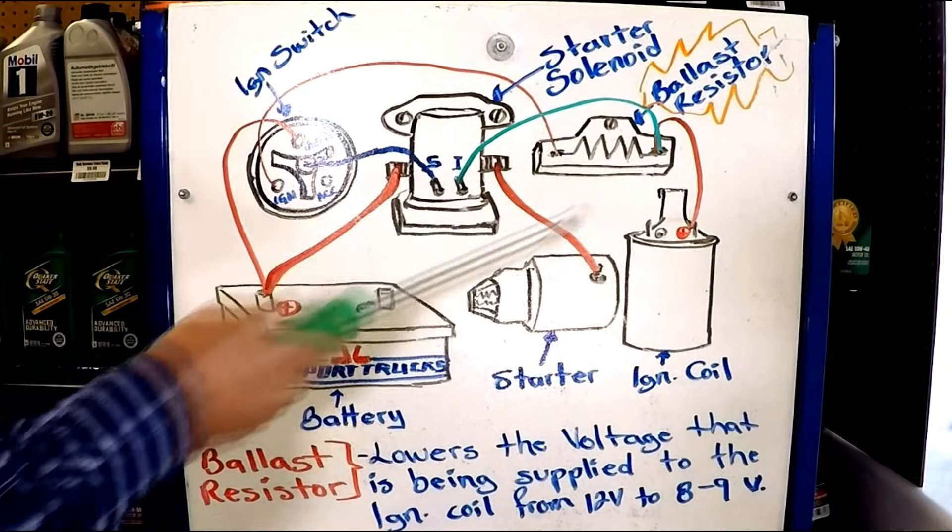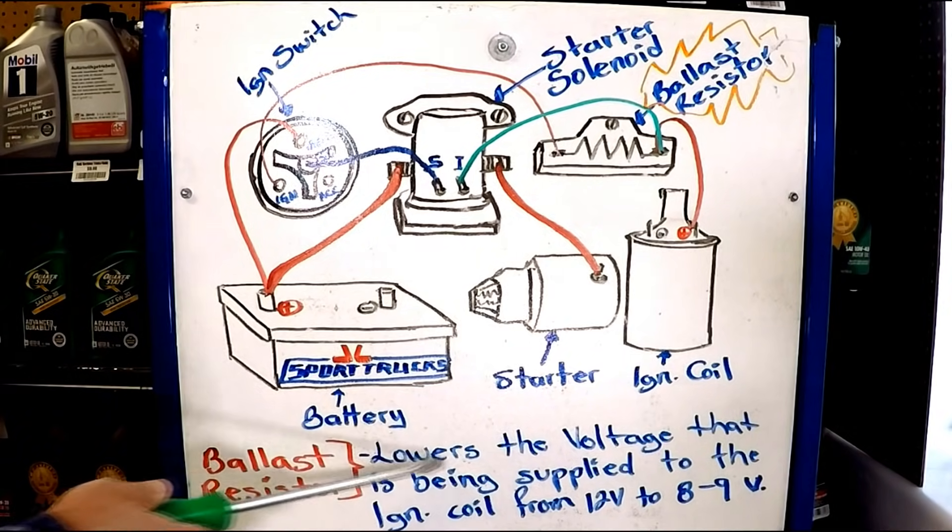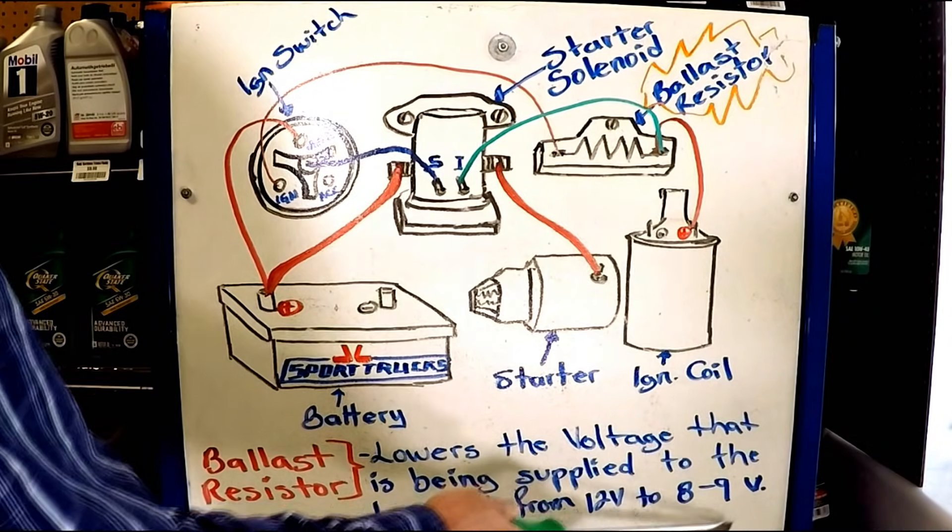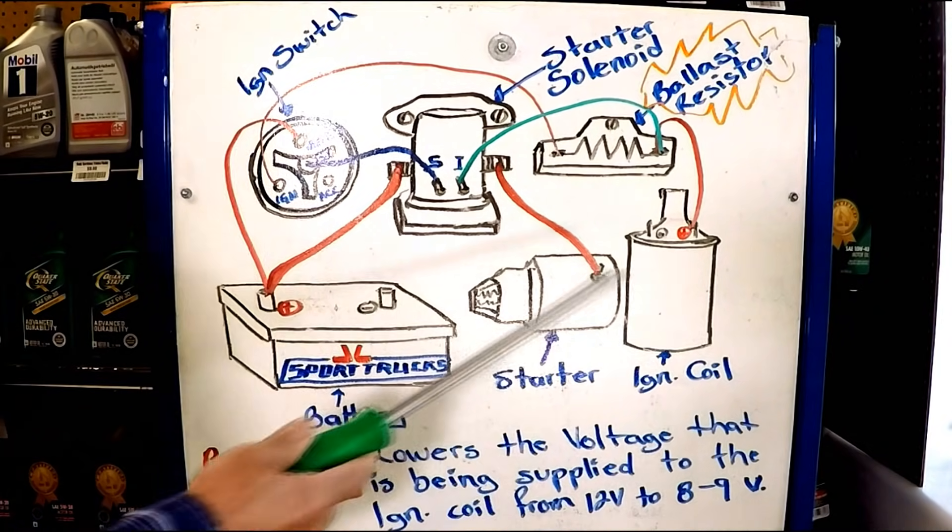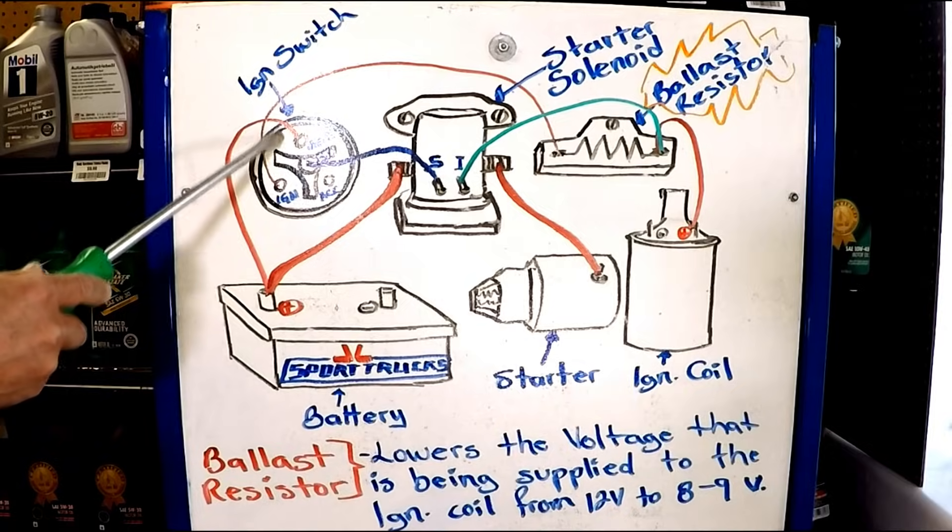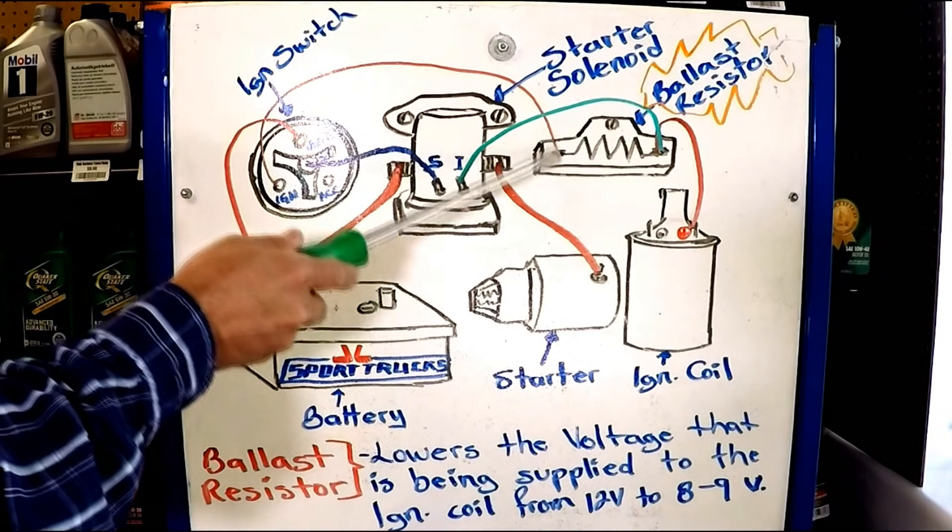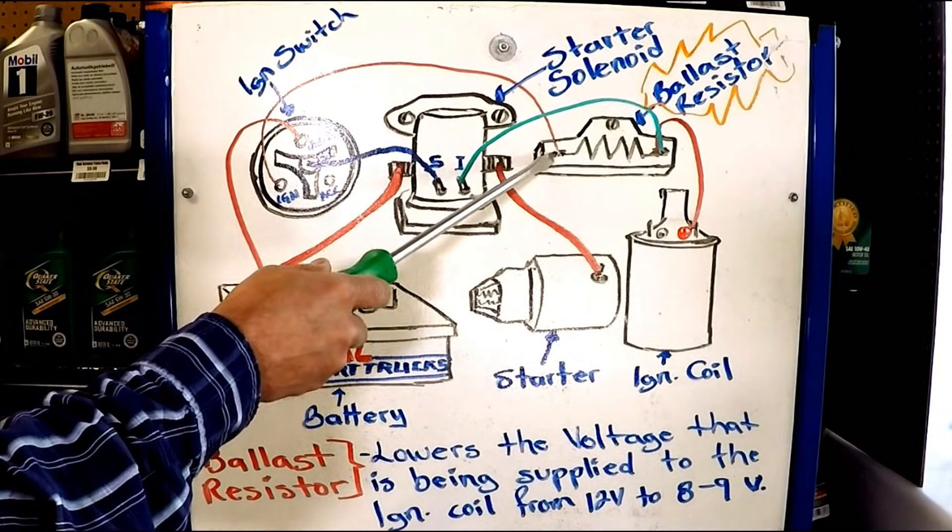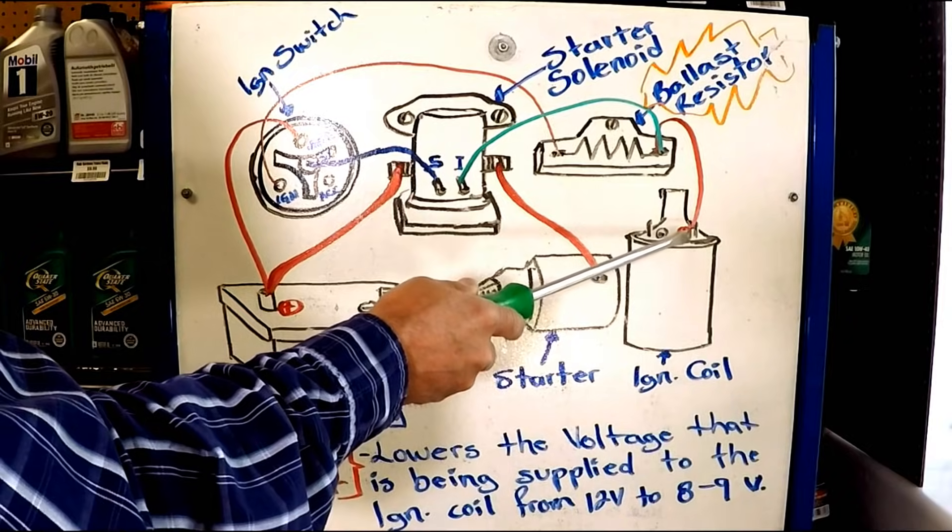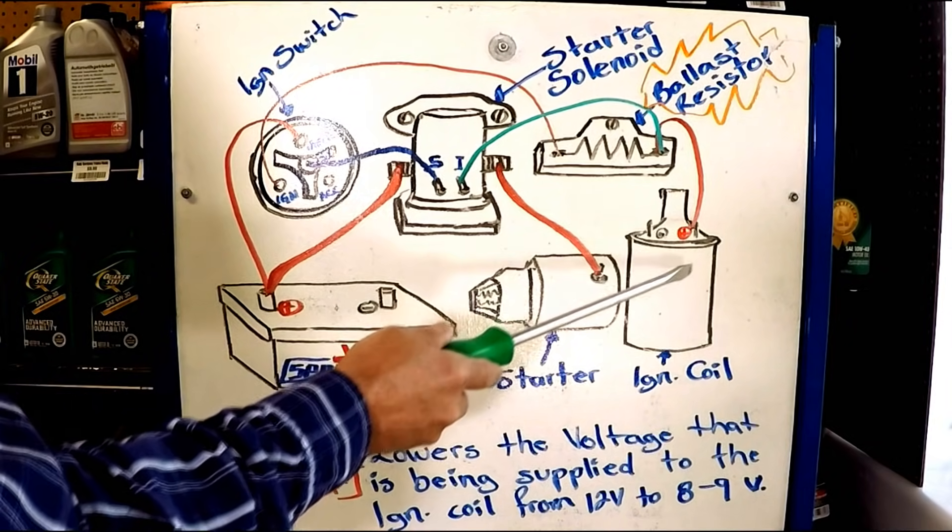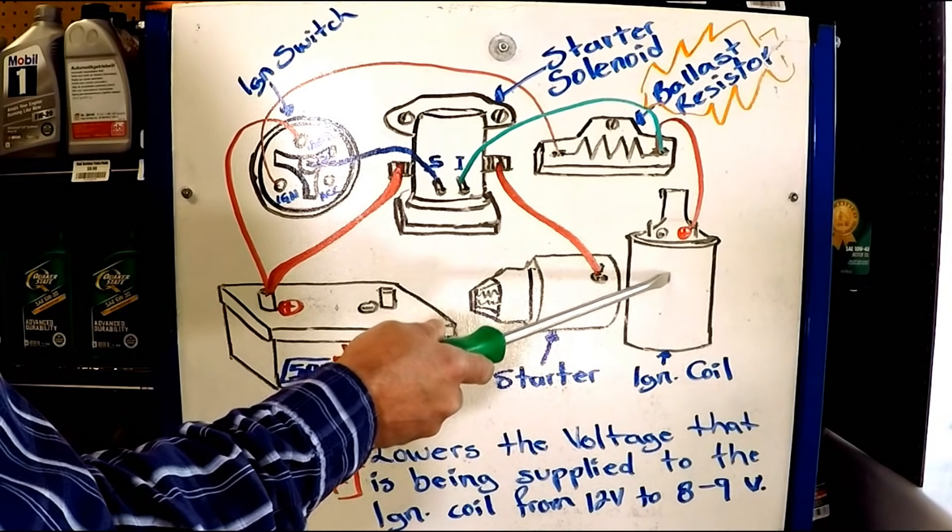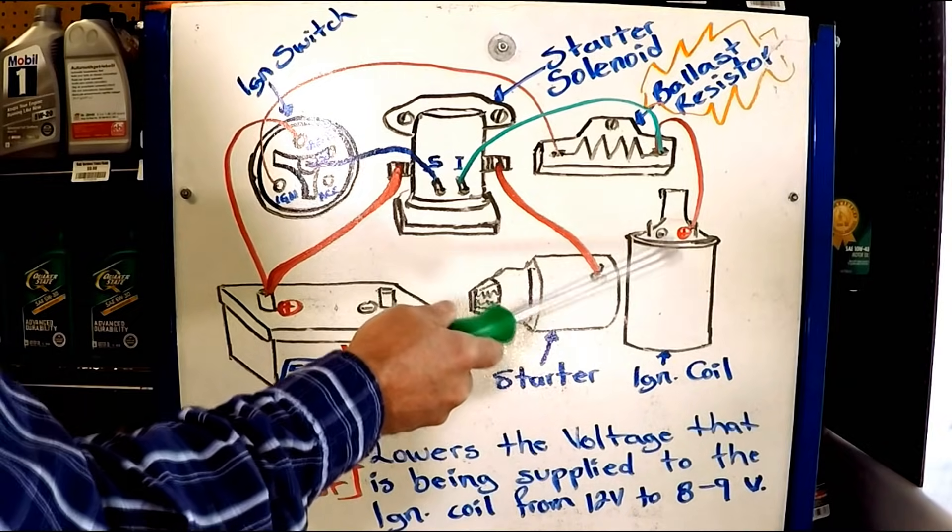So let's go over the concept of the ballast resistor. What the ballast resistor does, it lowers the voltage that is being supplied to the ignition coil from 12 volts to anywhere from 8 to 9 volts on average. So let's see how this takes place. The battery is going to supply a constant 12 volt voltage to the ignition switch. When you turn the key on, 12 volts are being sent to the ballast resistor. And as mentioned, the ballast resistor is going to lower these 12 volts to anywhere from 8 to 9 that are going to be sent to the ignition coil.